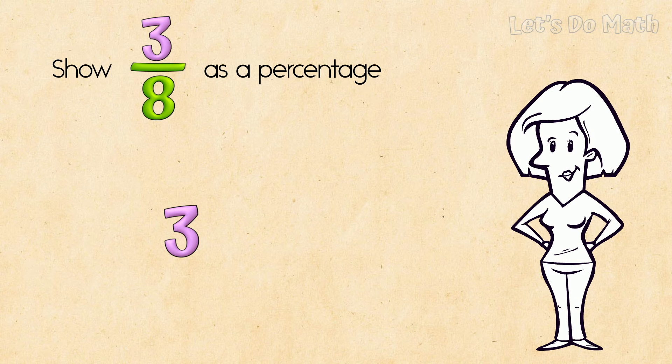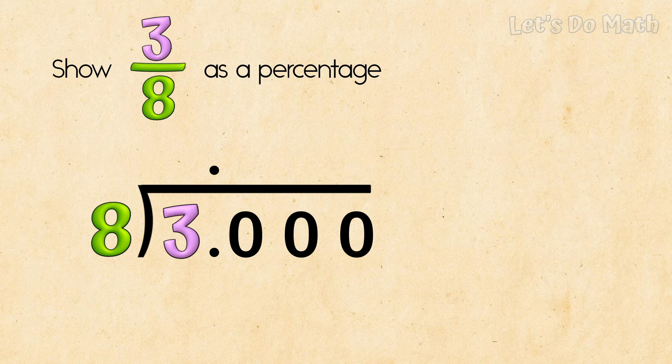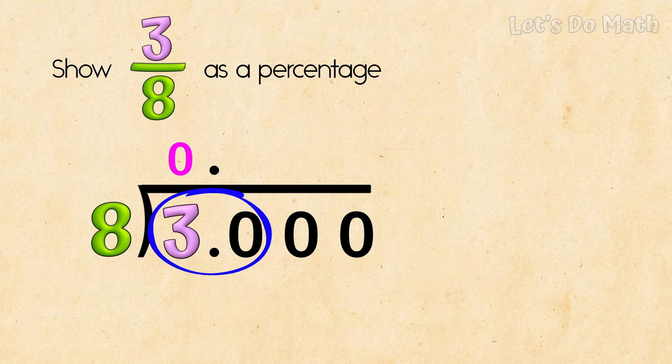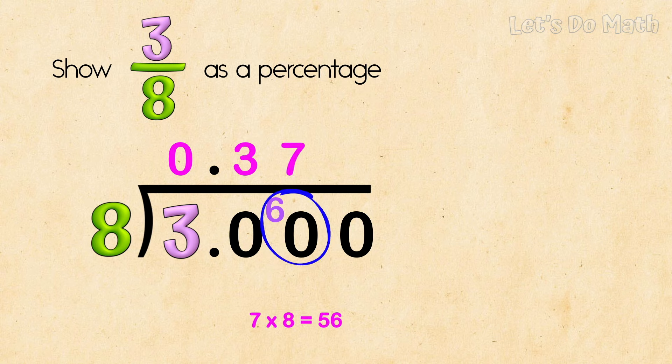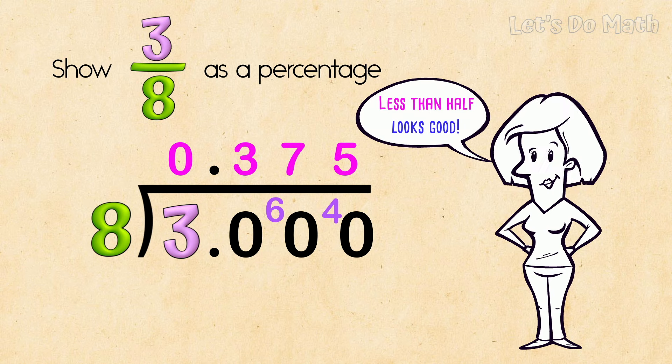We want 3 divided by 8. I'll need a decimal point and some zeros here. 8 into 30, 3—8s are 24, remainder 6. 8 into 60, 7—8s are 56, remainder 4. 8 into 40, 5. 0.375—less than half, looks good!